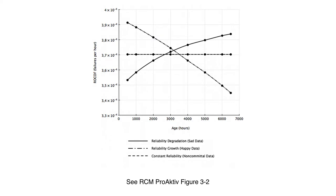Here we show three concepts. The middle or constant line shows a situation where the rate of occurrence of failures — that is the ROCOF — is constant. The reliability of the system does not get better but it also does not get worse. This is also called a non-committal situation. The solid line shows a situation where the ROCOF increases with age. This is the reliability degradation case — the rate at which failures occur increases with age. This is also called a sad situation.